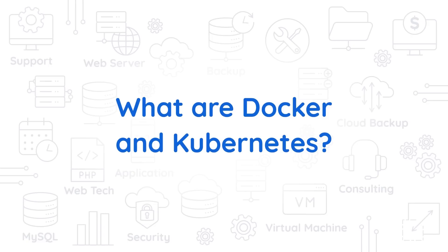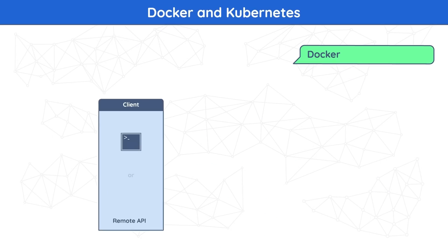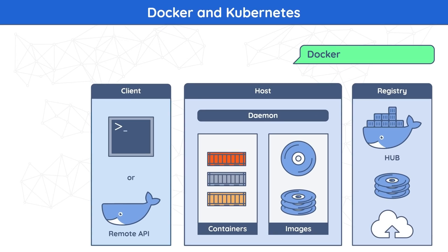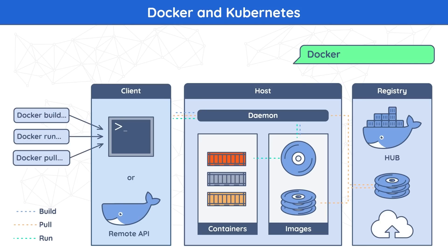What are Docker and Kubernetes? Docker is an open platform for developing, distributing, and running applications. Docker grants the ability to separate applications from your IT infrastructure in order to deliver software quickly. In other words, Docker provides the ability to package and run an application in a container, allowing you to manage your infrastructure similarly to how you organize your applications. Docker uses what is known as a client-server architecture — the Docker client talks to the Docker daemon, which is responsible for building, distributing, and running Docker containers.